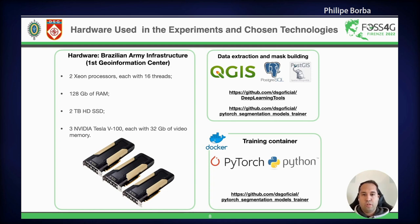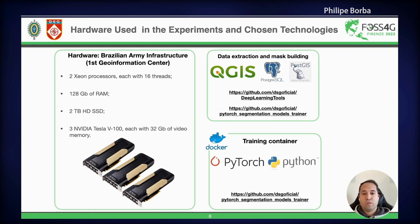In this research we used a machine learning model server with three NVIDIA Tesla V100 GPUs, each with 32 GB of video memory. The polygons were extracted using QGIS and stored in PostGIS. We developed a Python package called PyTorch Segmentation Models Trainer, which was used to build the masks and also to train the models. We also developed a plugin called Deep Learning Tools to handle the built masks, and this plugin can also consume API services that receive images and output GeoJSON polygons.